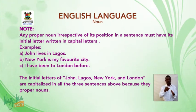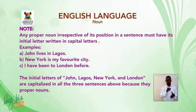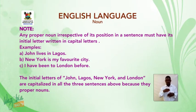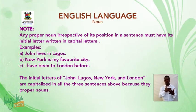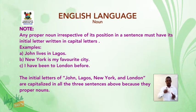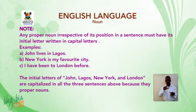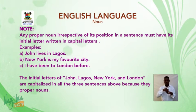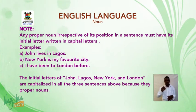Examples: John lives in Lagos. New York is my favorite city. I have been to London before. The initial letters of John, Lagos, New York, and London are capitalized in all three sentences because they are proper nouns.